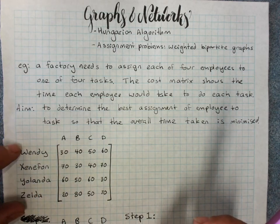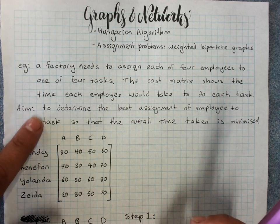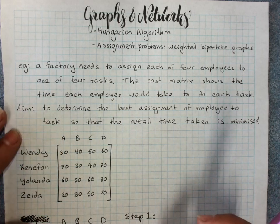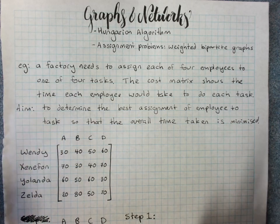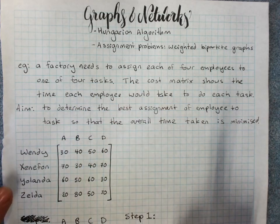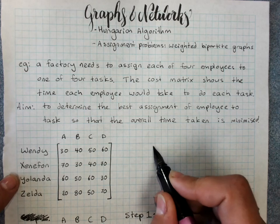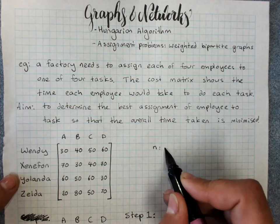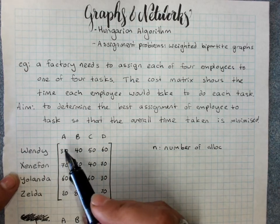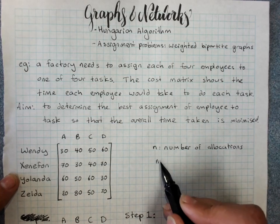We're only going to do square matrices for employees for tasks. And our aim is to determine the best assignment of employee to task so that the overall time required is minimized. And if you think about we're paying them for their time, we're also minimizing the cost. So one piece of information you need is I'm going to refer to N, which is the number of allocations needed. And it's also the same as number of rows and columns. So in this, N is four.